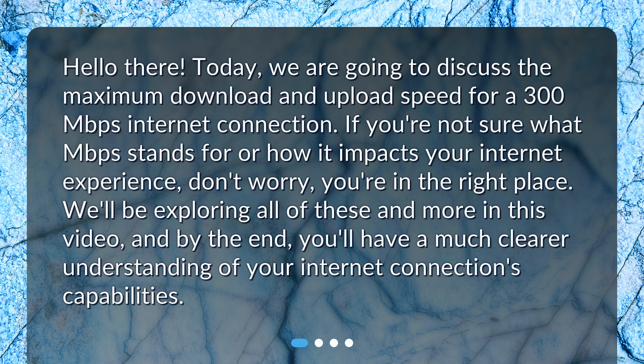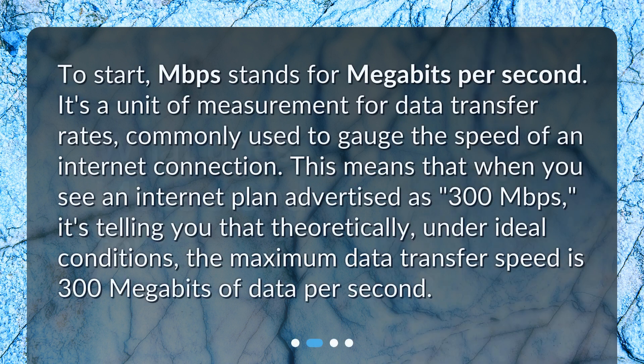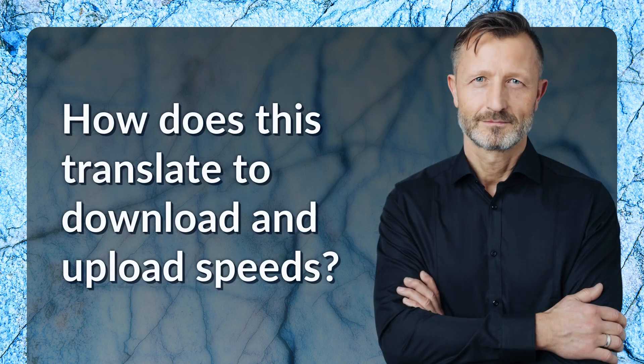By the end, you'll have a much clearer understanding of your internet connection's capabilities. What does Mbps stand for? Mbps stands for megabits per second. It's a unit of measurement for data transfer rates, commonly used to gauge the speed of an internet connection. This means that when you see an internet plan advertised as 300 megabits per second, it's telling you that theoretically, under ideal conditions, the maximum data transfer speed is 300 megabits of data per second.